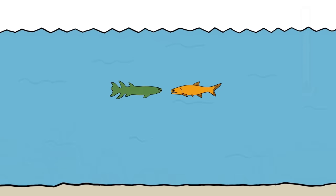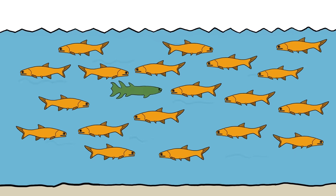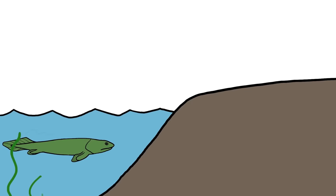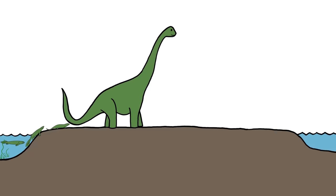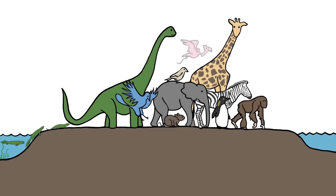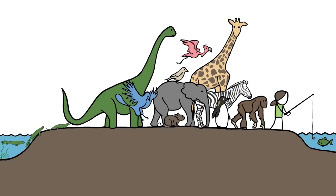After the catastrophe, the ray-finned fishes recovered and took over the seas. The lobe fins never recovered, but a few survivors in the shallows managed to find their footing out of the water, and eventually gave rise to every back-boned, four-limbed creature to ever crawl, hop, fly, or walk on land.